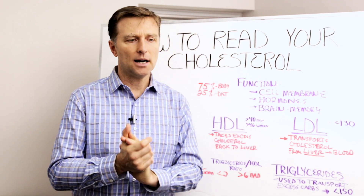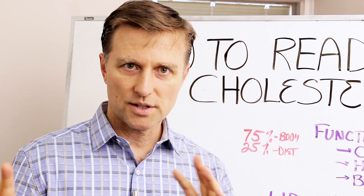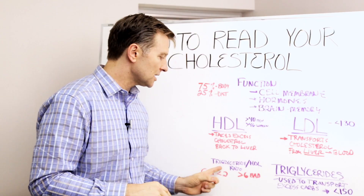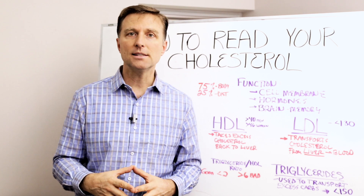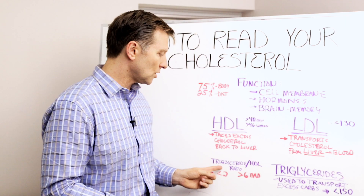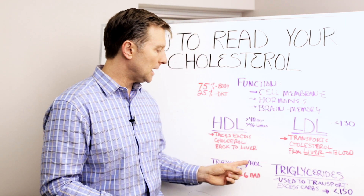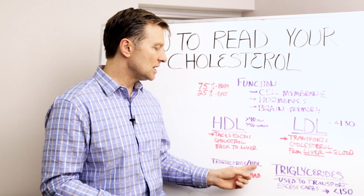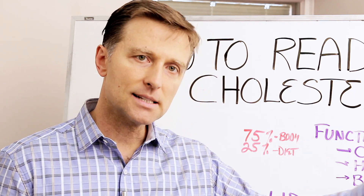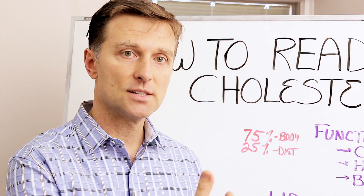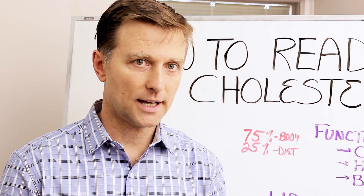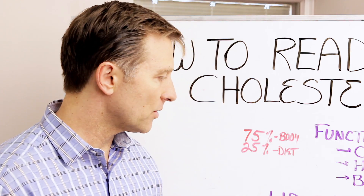They also talk about total cholesterol to HDL ratios and various calculations, but I prefer the triglyceride-to-HDL ratio — it gives the best indicator of your risk for heart disease. You simply divide total triglycerides by HDL and that gives you the ratio. If it's greater than six, there's a problem. If it's two or less, it's good. We want it to be lower.